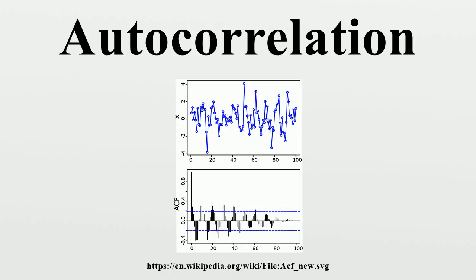Regression analysis: In regression analysis using time series data, autocorrelation in a variable of interest is typically modeled either with an autoregressive model, a moving average model, the combination as an autoregressive moving average model, or an extension of the latter called an autoregressive integrated moving average model.